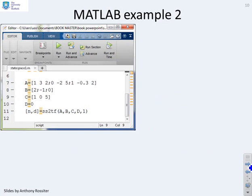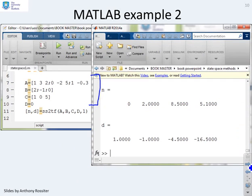Second example then. Again you'll see I've entered the ABCD matrices, but here I've made it a bit more complicated because I've made the A matrix three by three. So if you wanted to invert this by hand you're beginning to have quite a painful job. But I stick it into MATLAB and it gives me the coefficients of the numerator and the coefficients of the denominator without any difficulty.